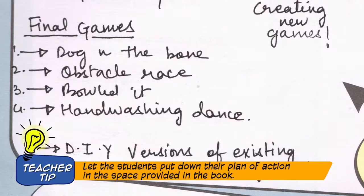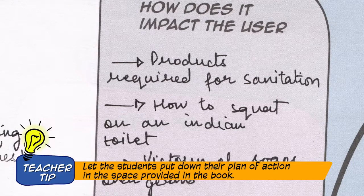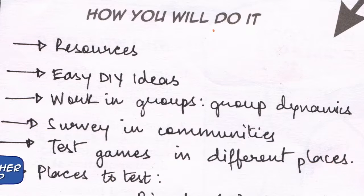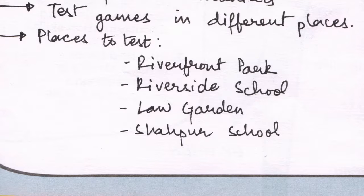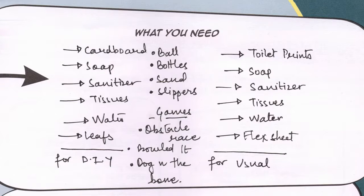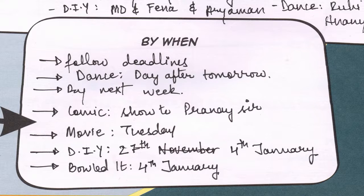After that we came up with the plan of action, then we finalized different games each with a purpose. We made four groups each with a game, and also decided places to test our game. We divided our group into three areas: resources, charts, and presentation, and decided a deadline for each aspect of the plan.